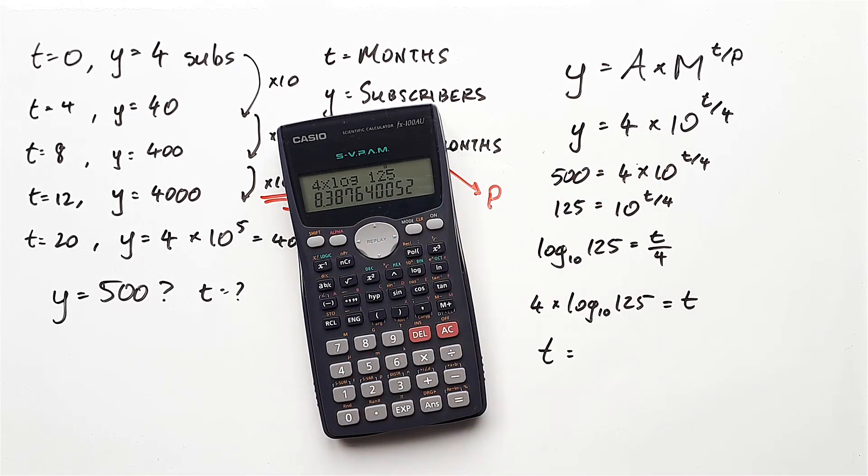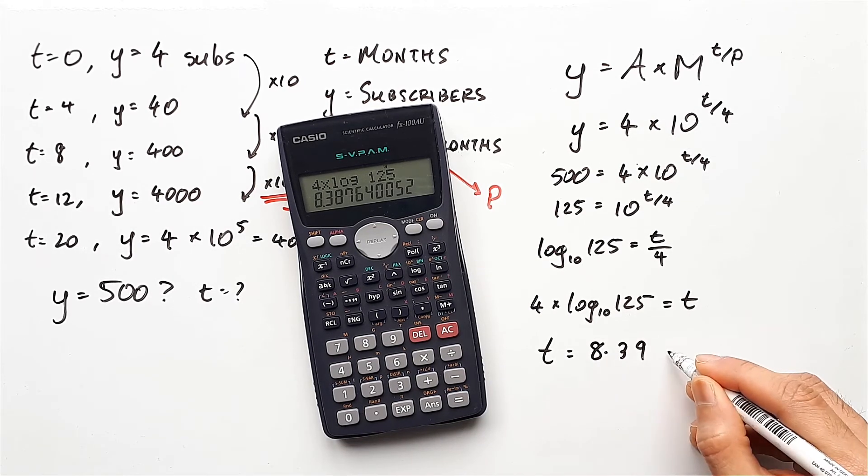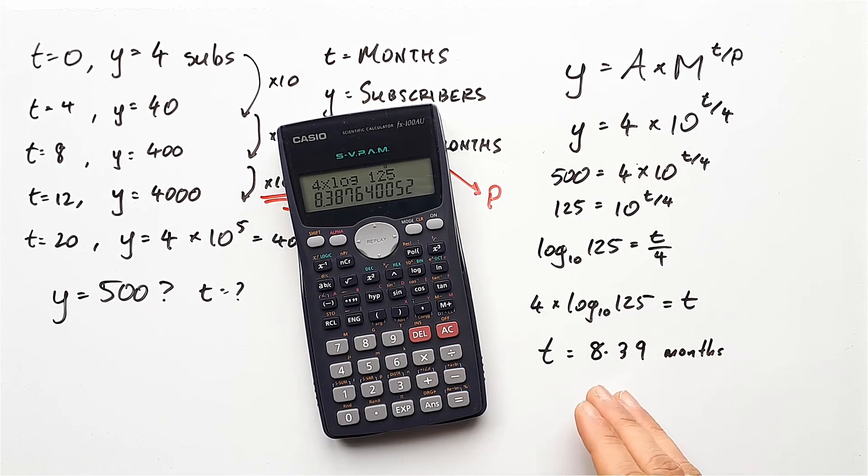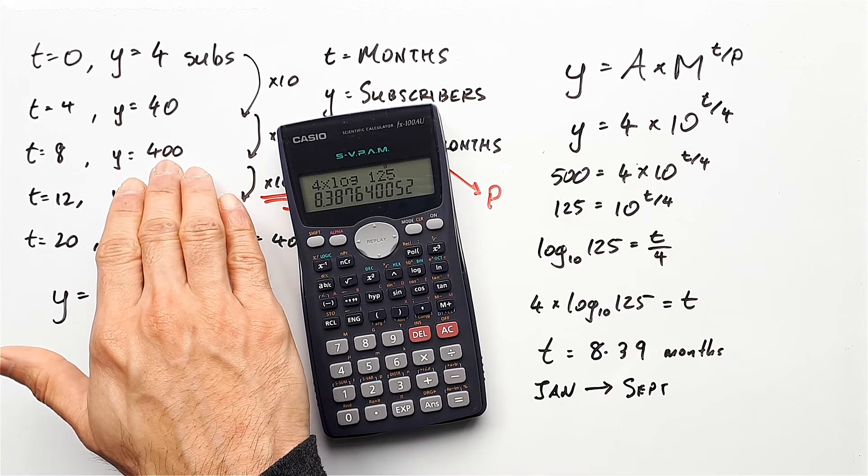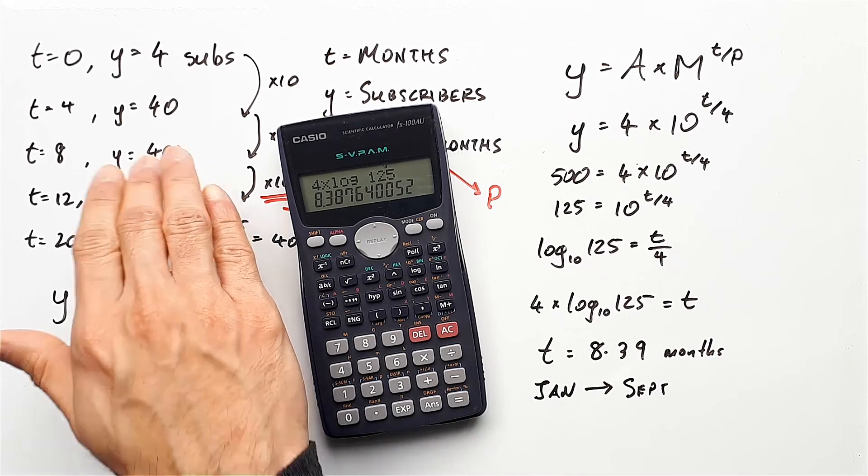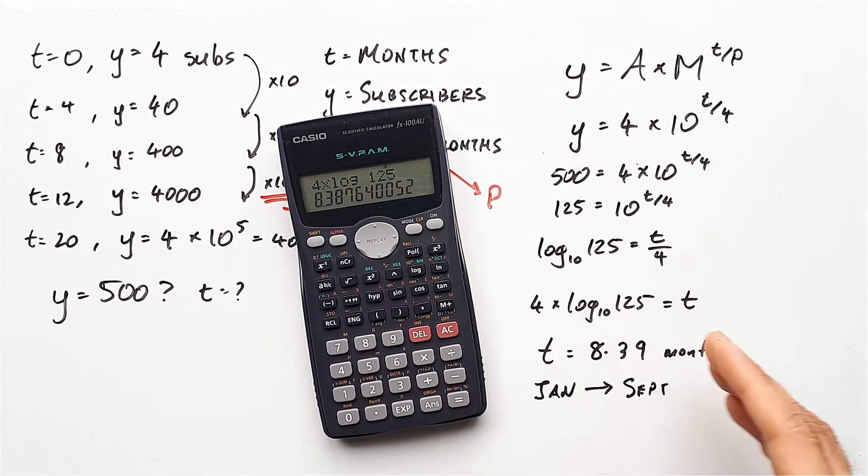In other words, if you started this channel at the very beginning of January, you would have gone through eight months, which means the end of August right through into September. So this is somewhere in the early part of September, I suppose. At the very end of August, you would hit 400 subscribers. But as you enter September, at some point in it, you will hit 500.